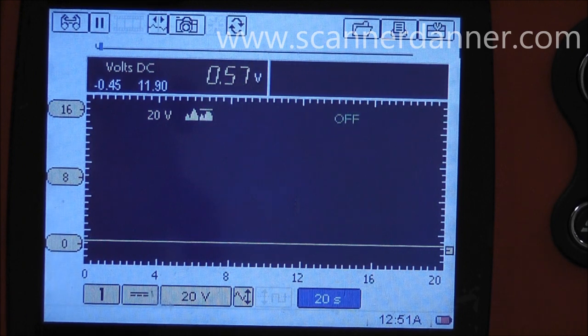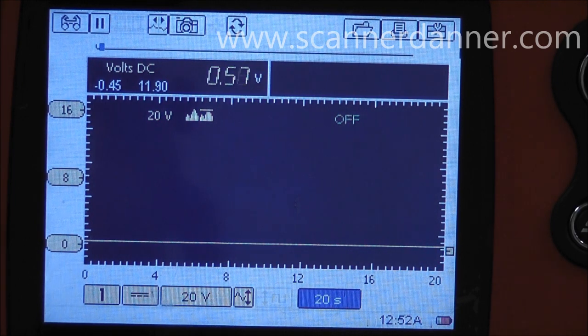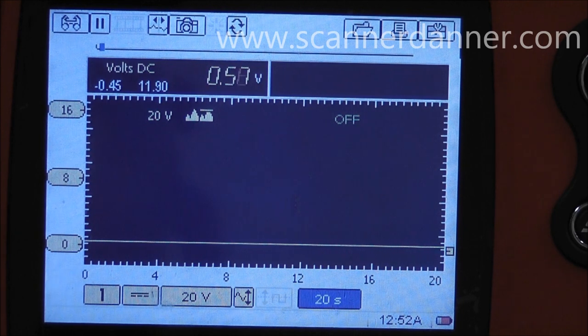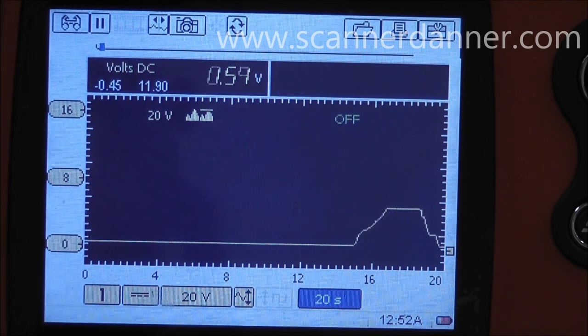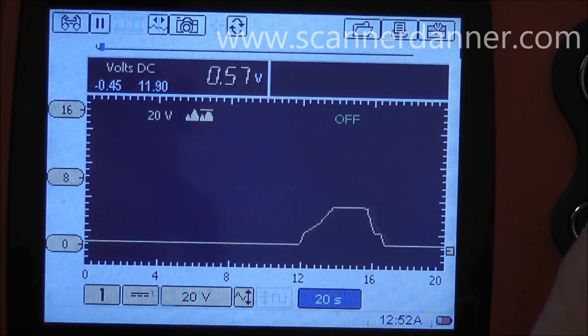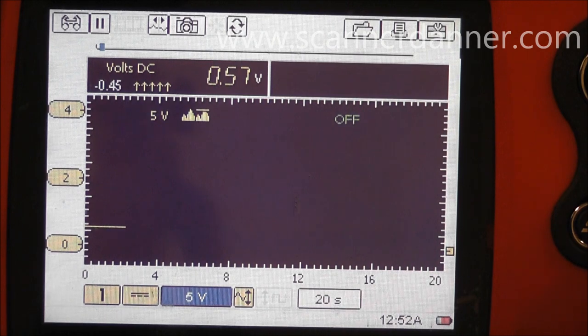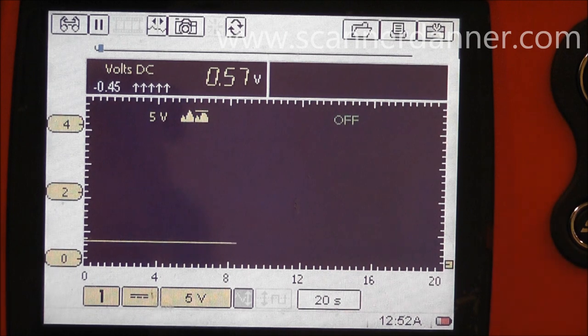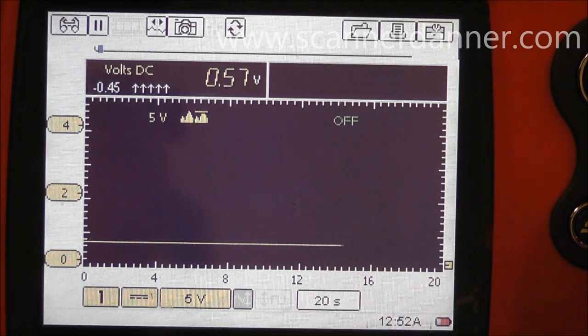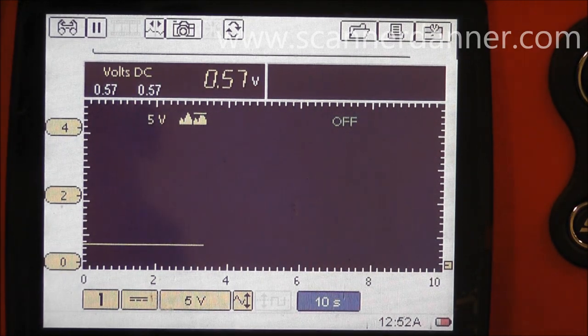Alright, using the Snap-on Vantage for this one. I'll keep you guys focused on the scope. All I'm going to do, got the key on, engine's off obviously, and I'm going to open and close the throttle and see what we got as far as a TPS sweep goes. That looks pretty good, although we're on a 20 volt scale. I'm going to change that scale. We're going to come over to a 10 volt. I mean, we could even use five. The only issue with a five is maybe we have to pull this zero line down so we just see the top of the waveform. My time base, 20 second time base, that might be a little bit too long. Maybe we're going to drop that down to 10.